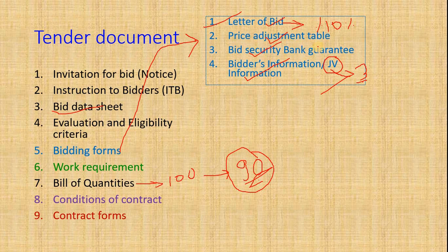The Price Adjustment Table is prepared by the public entity. It is used for multi-year projects — like two-, three-, or four-year projects — and the price adjustment accounts for inflation in material and labor costs.